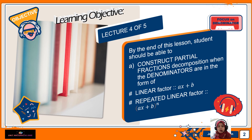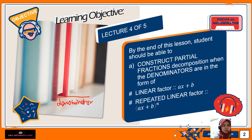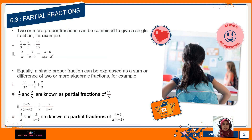You should be able to construct partial fractions depending on its denominator. Do you remember what a denominator is? It is at the bottom of a fraction. So the bottom is our denominator and the top is our numerator. Now let's continue with 6.3 Partial Fractions. Two or more proper fractions can be combined to give a single fraction.